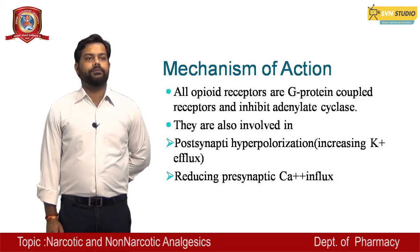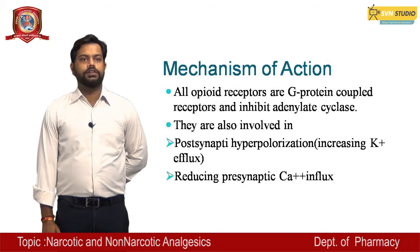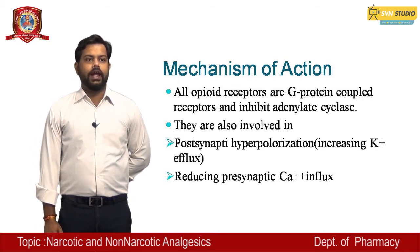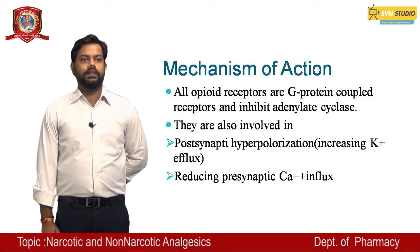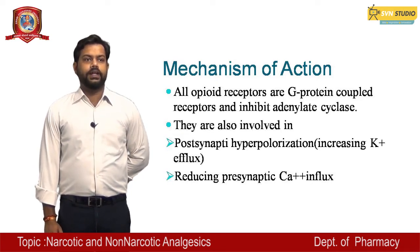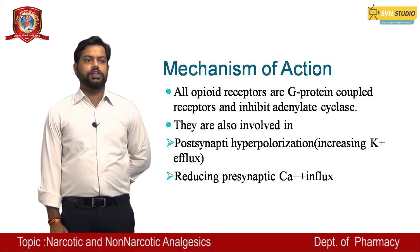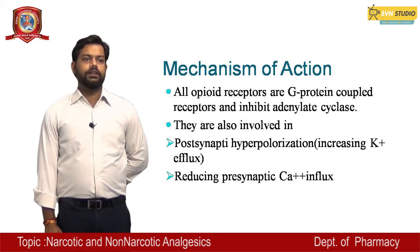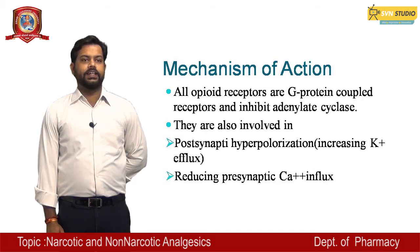Mechanism of action: all opioid receptors are G-protein coupled receptors and inhibit adenylate cyclase. They are also involved in post-synaptic hyperpolarization, which involves increasing the potassium (K+) efflux or reducing presynaptic calcium (Ca2+) influx.